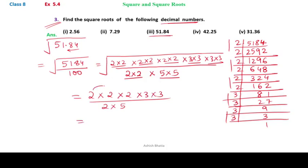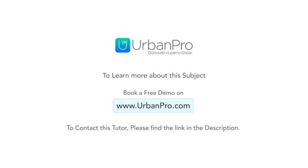So what do we get here: 2 2s are 4, 4 2s are 8, 3 3s are 9, 8 9s are 72. 72 divided by 10, so we get here 7.2. So square root of 51.84 is 7.2.